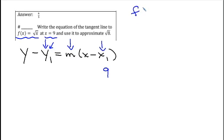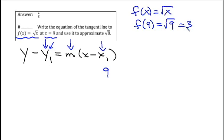So I'm going to take the function f of x equals the square root of x, and I'm going to find f of 9, and so the square root of 9 is 3. So there's my y value. So I now have y minus 3 equals some slope times x minus 9.